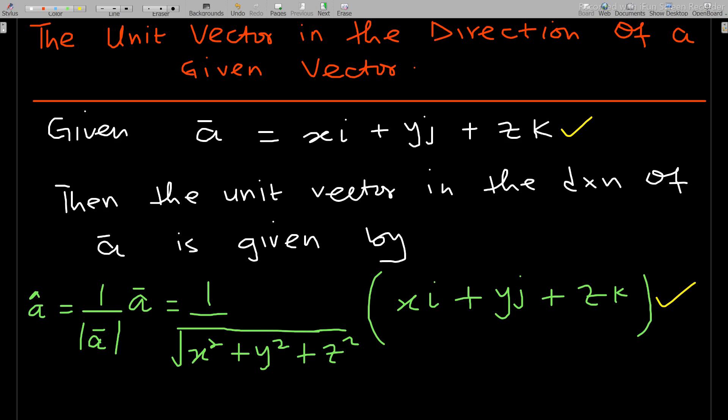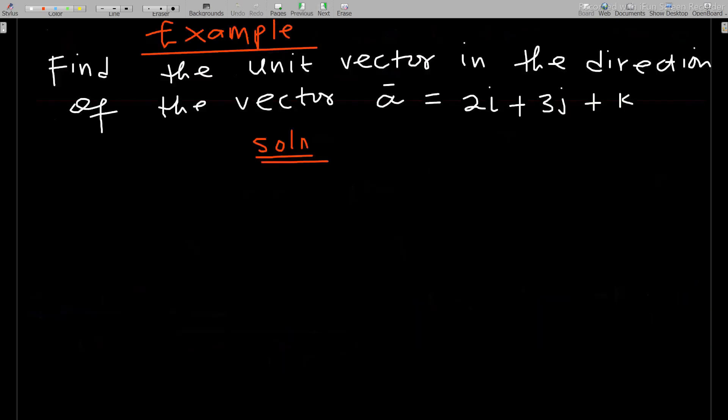You can also go ahead and prove that the magnitude is indeed one. But let's take an example: find the unit vector in the direction of the vector a, which is given as 2i + 3j + k.